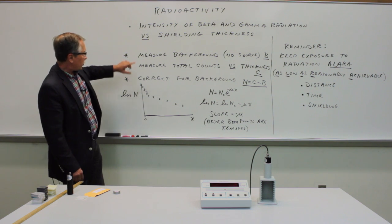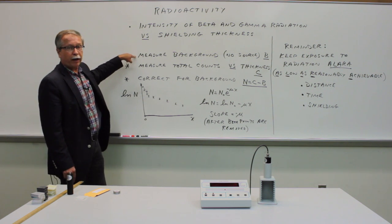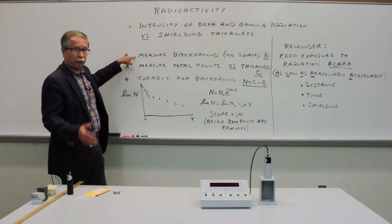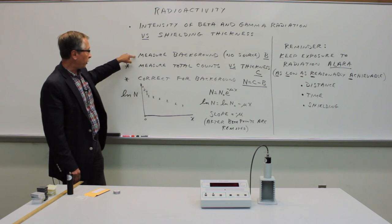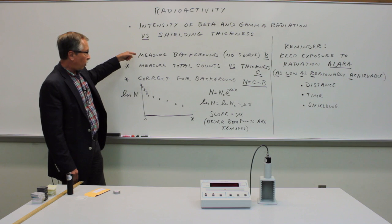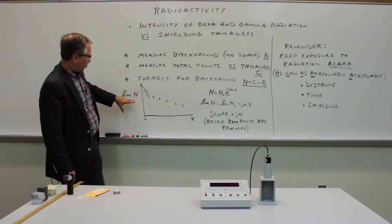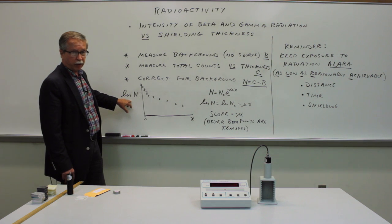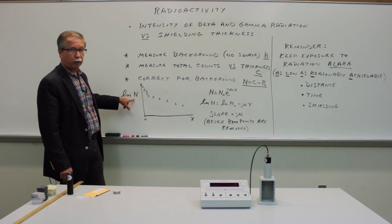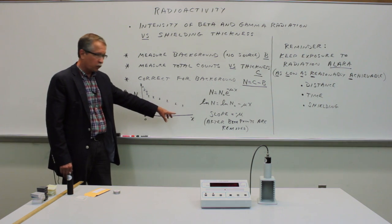So the basic idea: as usual we measure the background radiation independently before bringing the source into play and correct all of the data for the presence of background. Then what we'll do, as we did for the gamma radiation experiments, we'll plot the natural log of the corrected count as a function of thickness of material.